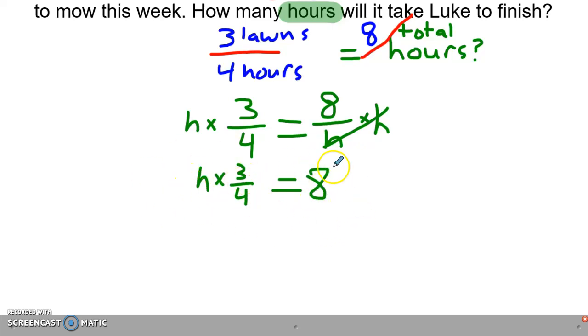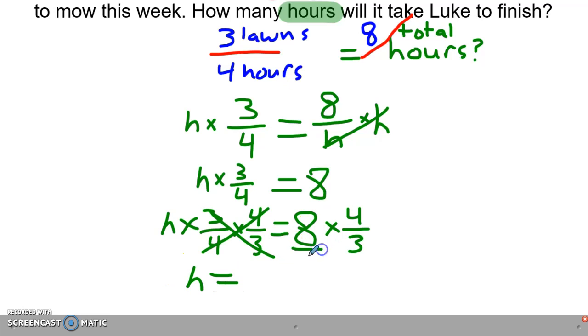Because I'm multiplying a fraction, I'm going to multiply by the reciprocal. Whatever I do to one side I do to both sides. These cancel, with h equals 8/1 times 4/3. Eight times four is...